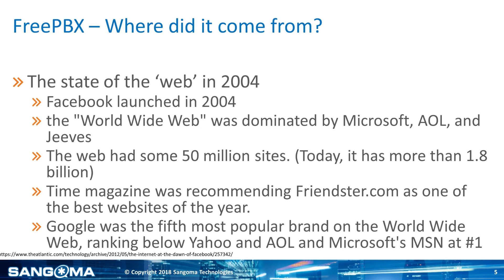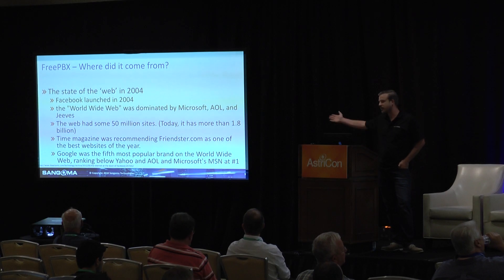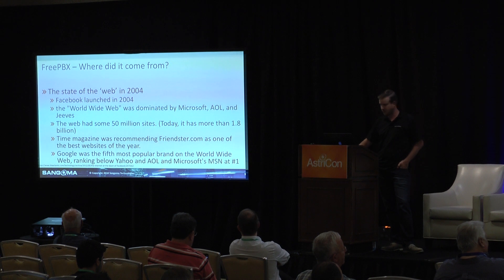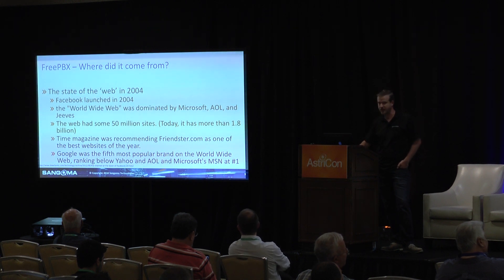To give you an idea of how different the web was then: Time Magazine was recommending Friendster.com as the website of the year — we all know how that went. There were about 50 million websites then. Now we have 1.8 billion. I actually looked that up last week to make sure it was accurate.